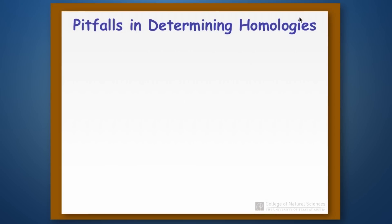Welcome back. We're going to finish up talking about how to use morphological characters to reconstruct a phylogenetic tree, and we're going to pick up talking about determining character polarity.